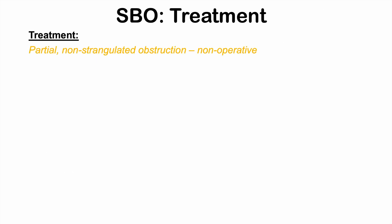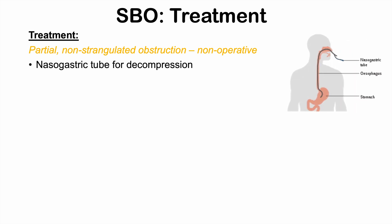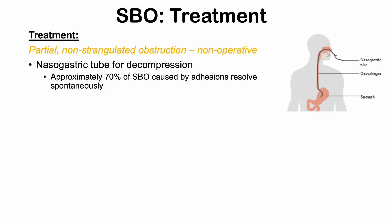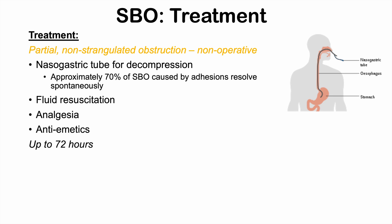For partial and non-strangulated obstructions, management is often non-operative. A nasogastric tube is placed through the nose into the stomach for decompression — suctioning out stomach contents — which can help with symptoms significantly. Approximately 70% of small bowel obstructions caused by adhesions can resolve spontaneously this way. Along with the NG tube, treatment includes IV fluid resuscitation, analgesia for pain control, and antiemetics to reduce nausea and vomiting. These non-operative methods are utilized for up to 72 hours.